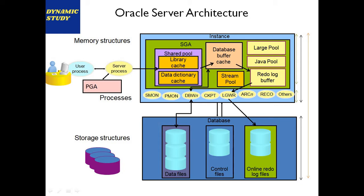The Archiver process reacts if the database is in archive log mode. Archive log mode can be enabled on the database (covered practically in the next tutorial). When an online redo log file becomes full and switches to another, a backup is automatically generated to the specified archive location. That file is known as an archive log file, and it is managed solely by the Archiver process.